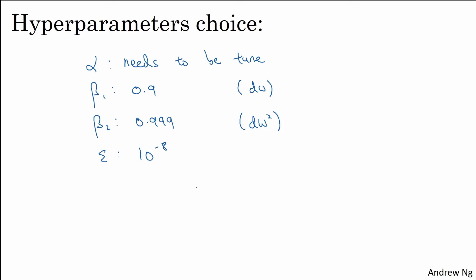But when implementing Adam, what people usually do is just use the default values of beta 1 and beta 2, as well as epsilon. I don't think anyone ever really tunes epsilon. And then try a range of values of alpha to see what works best. You could also tune beta 1 and beta 2, but it's not done that often among the practitioners I know.